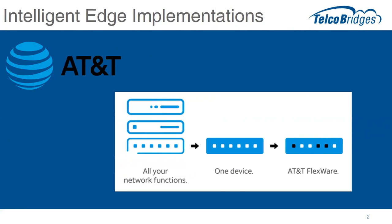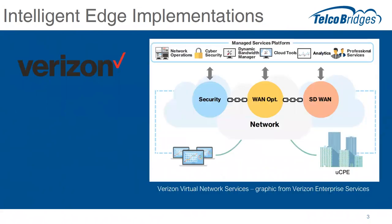Marketed to large enterprises, FlexWare bids to reduce complexity and offer new services without stacks of optical network termination devices, separate routers, firewalls, and other devices — combining them all into a virtualized software-based single appliance at the customer site. Verizon has done something similar, creating a very similar offering called Verizon Virtual Network Services, combining security, network termination, and SD-WAN connectivity along with application platforms to a broad range of enterprise customers.